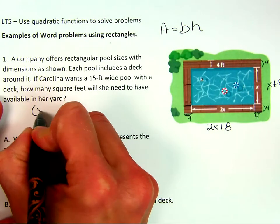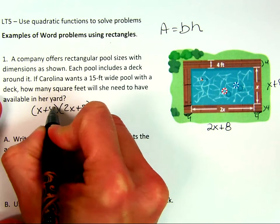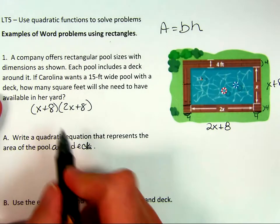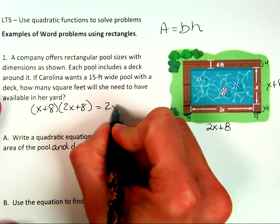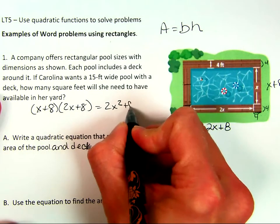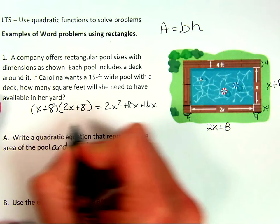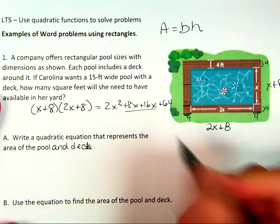So we're going to say x plus 8 times 2x plus 8. I'm going to use FOIL, but some of you like the box method. Whatever you want to use, you can. We just need to get those two multiplied. So x times 2x is 2x squared. x times 8 is 8x. 8 times 2x is 16x. And 8 times 8 is 64.